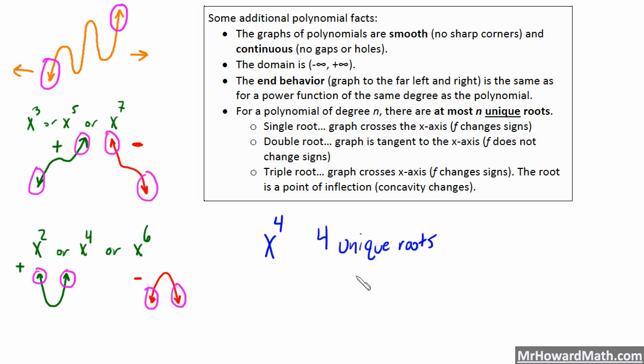x to the 5th, 5 unique roots at most. x squared, 2 unique roots at most. That's what we're saying there. A single root is where a graph crosses the x-axis.